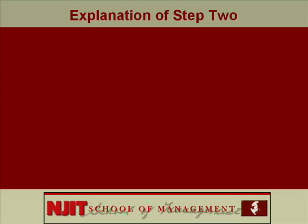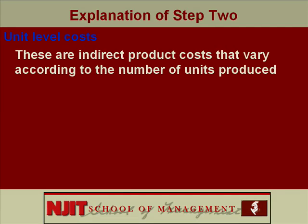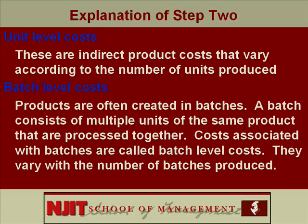Here are the definitions. Unit level: an activity level where indirect product costs — that's overhead — vary with the units produced. Batch level: an activity level where the overhead varies with batches produced. Products are often created in batches — a batch consists of multiple units of the same product processed together. Costs associated with batches are called batch level costs and vary with the number of batches produced.